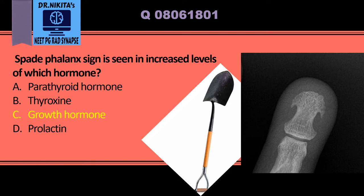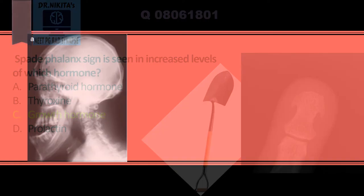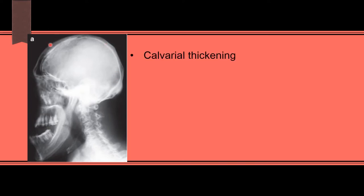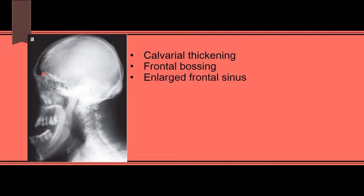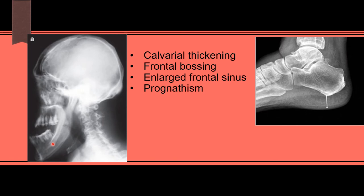The other features in acromegaly which are important to know: in this X-ray skull, there is calvarial thickening, there is frontal bossing, the frontal sinus here is enlarged — it contains air so it appears black — and there is prognathism of the mandibular angle.